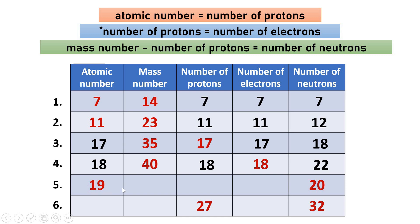For number five, the atomic number is 19 and the number of neutrons is 20. Since the atomic number equals the number of protons, number five has 19 protons. Since the atom is neutral, the number of electrons is also 19. To get the mass number, we add the number of protons and neutrons: 19 plus 20 equals a mass number of 39.